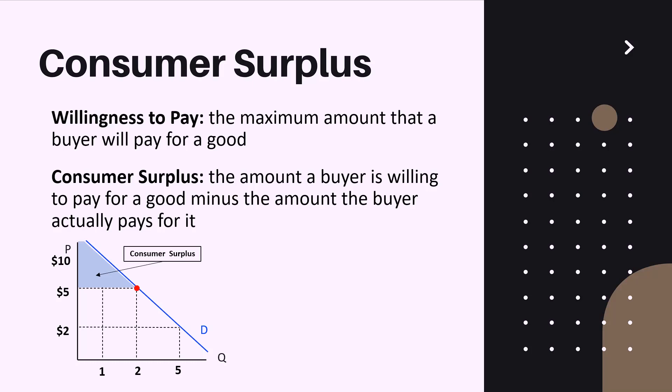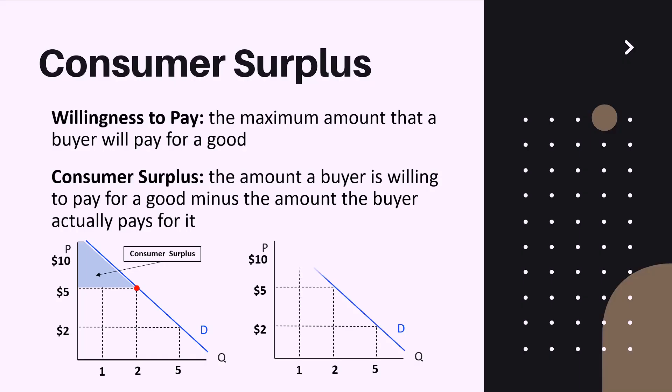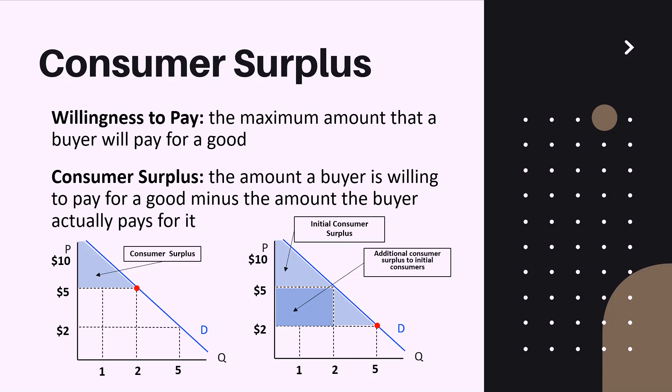Now let us graphically understand what happens when the equilibrium price changes. Say the equilibrium price is now two dollars. The consumer surplus now consists of three parts: the initial consumer surplus from before, the rectangle representing additional consumer surplus to initial consumers from the price reduction, and a third smaller part representing the consumer surplus of new consumers who enter the market.